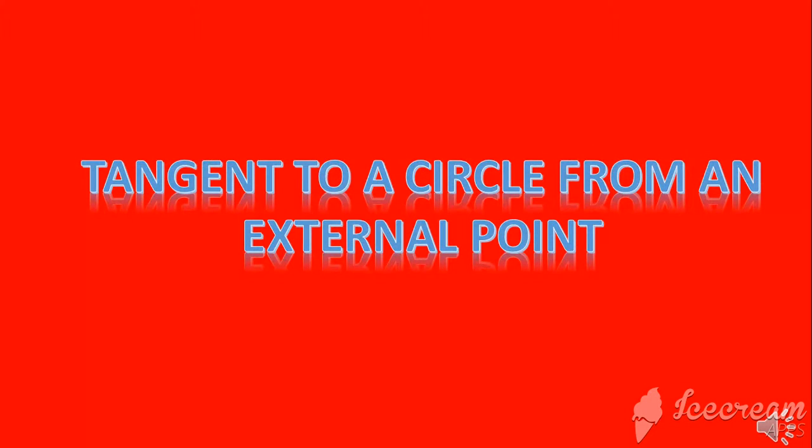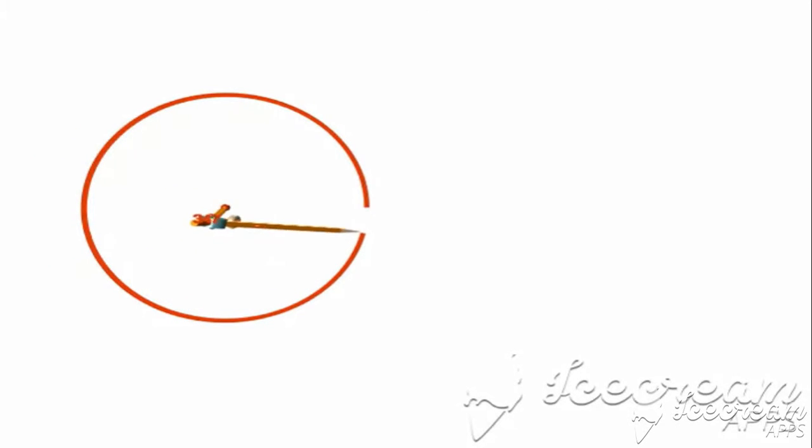Tangent to a circle from an external point. Take a point O with some radius, draw a circle, and take an external point P to the circle.